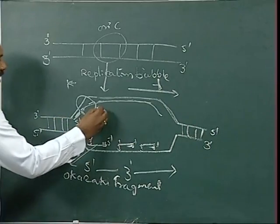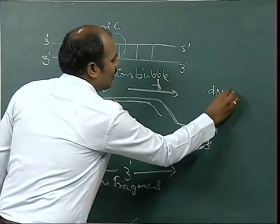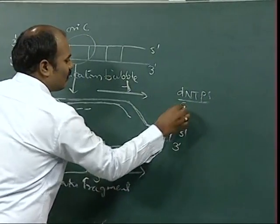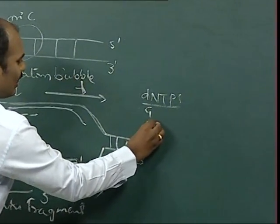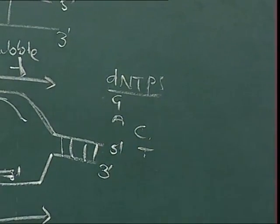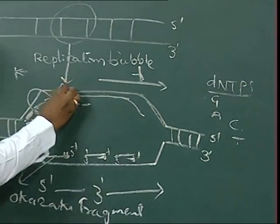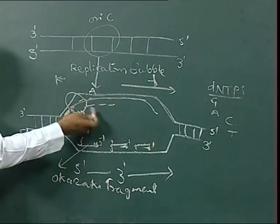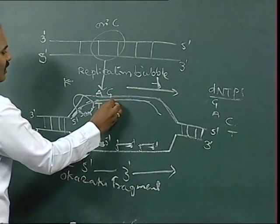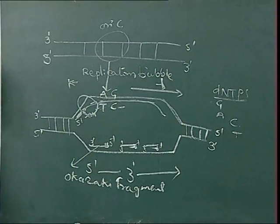During elongation, incoming nucleotides arrive as dNTPs — guanine, adenine, cytosine, or thymine. For example, if the old strand has adenine, the incoming nucleotide will be thymine. If the old strand has G, cytosine comes in. In this way, the whole strand is continuously and completely synthesized.